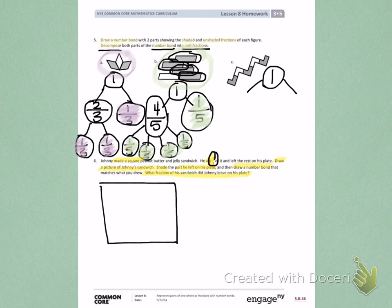The fraction that he ate is one-third. So, I need to divide my square into thirds. The only way to do this is straight lines. Now, when I look back, it tells me to shade what he left on his plate.